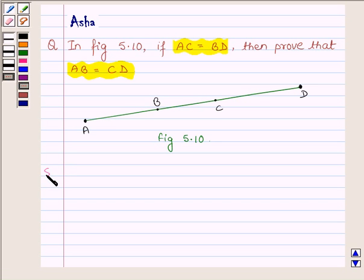So let us begin with the solution. In the following figure, we are given that AC is equal to BD.